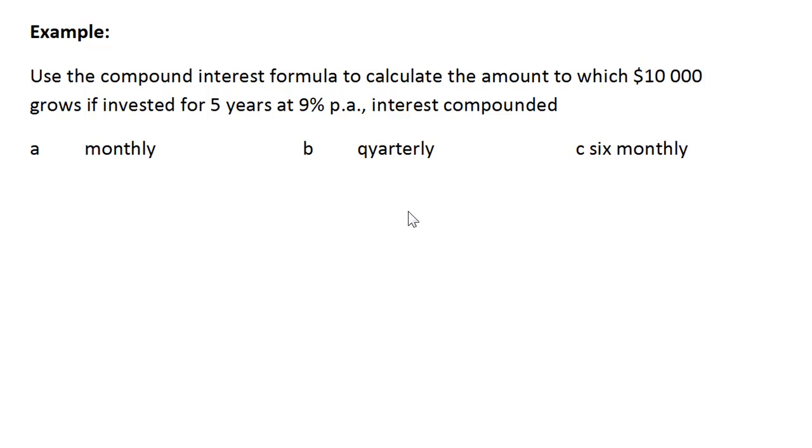Sometimes when we're working out compound interest, the interest period is not for just a once-off payment in a year, but rather it's compounded more than once a year. For example, in these three questions, we're going to look at where interest is paid monthly, where interest is also paid quarterly, and also where it's paid six monthly. So let's have a look and see how the formula can be adapted.